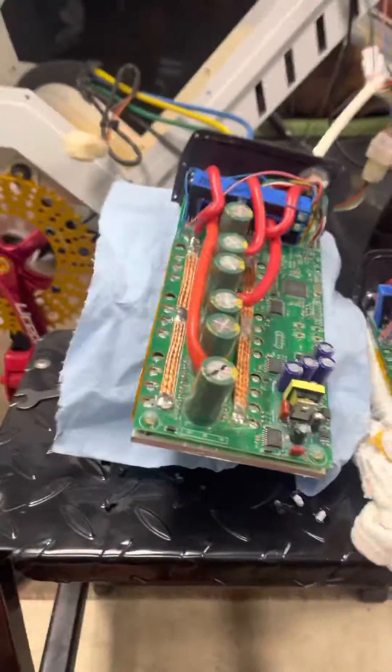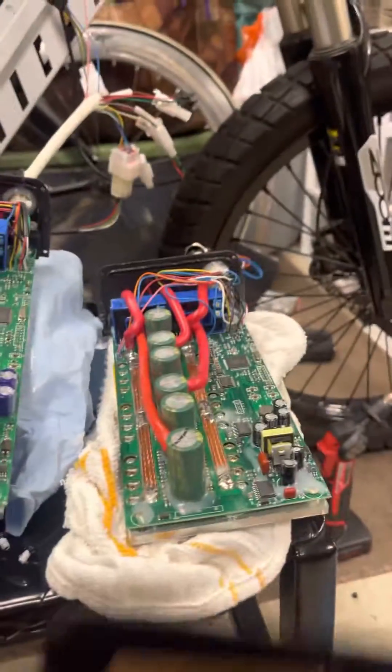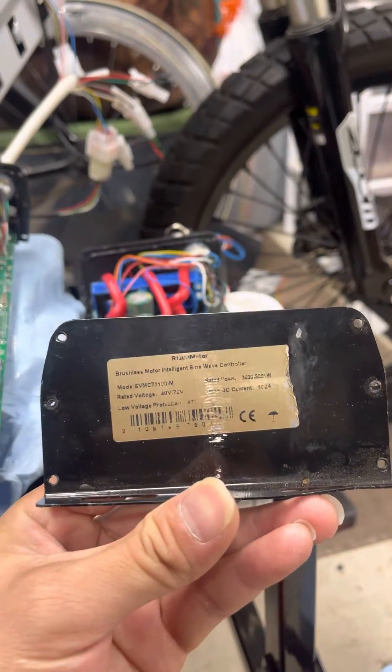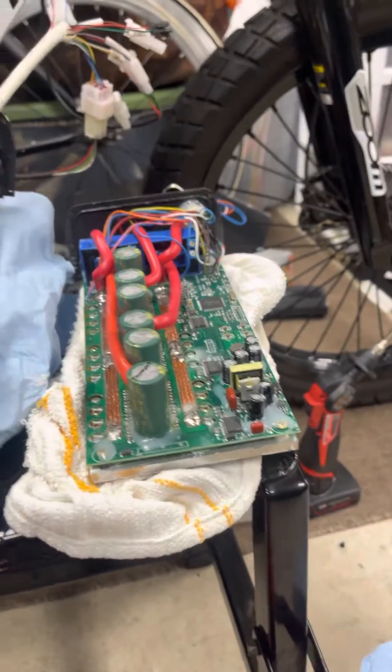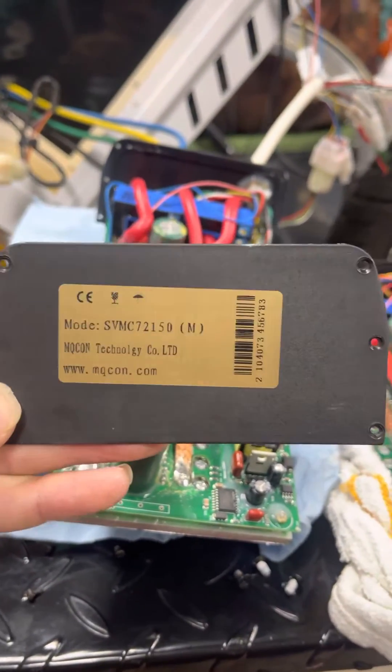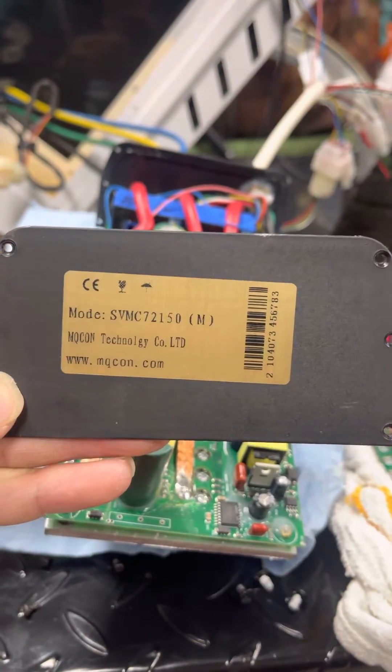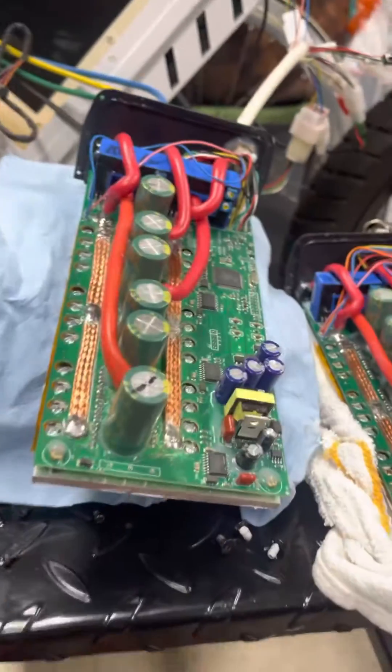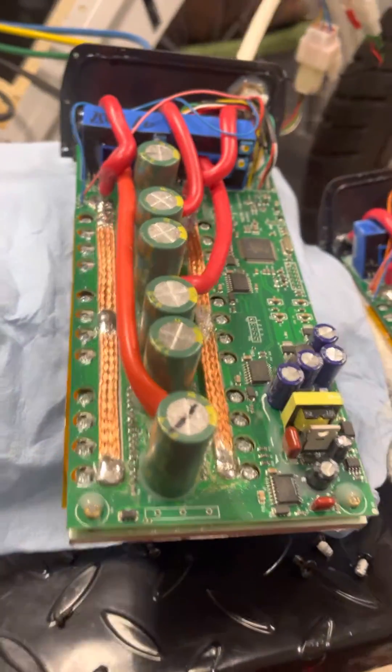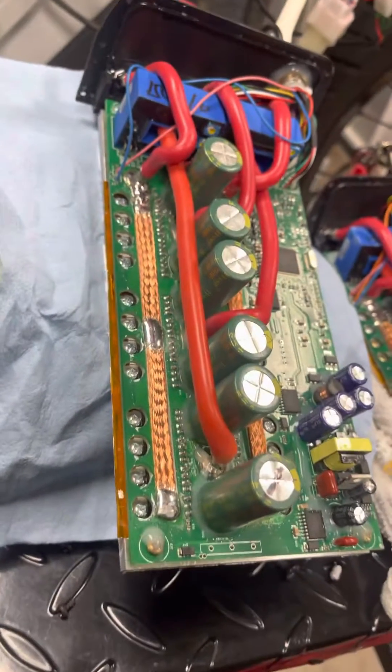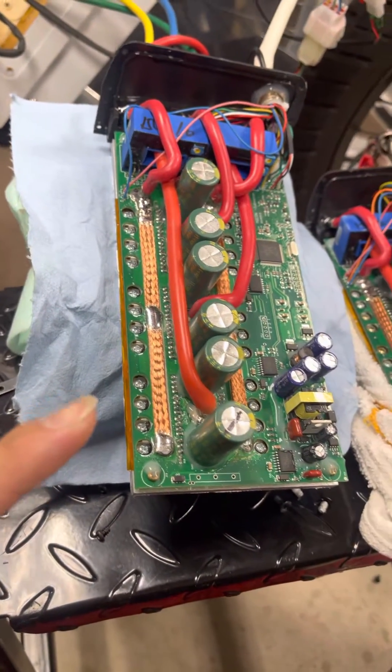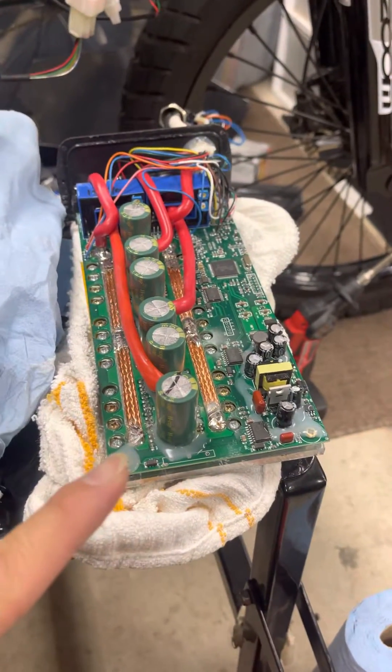Alright, so here's a little video I want to show. Over here we got the Ryson motor on the right, and on the left we got the Sabaton SVMC 72150. What I wanted to know is, are they the same? Because they look the same. This is the Sabaton and this is the Ryson.